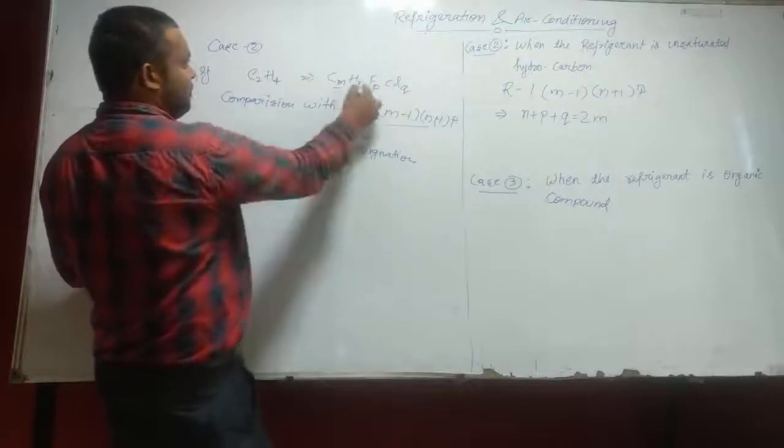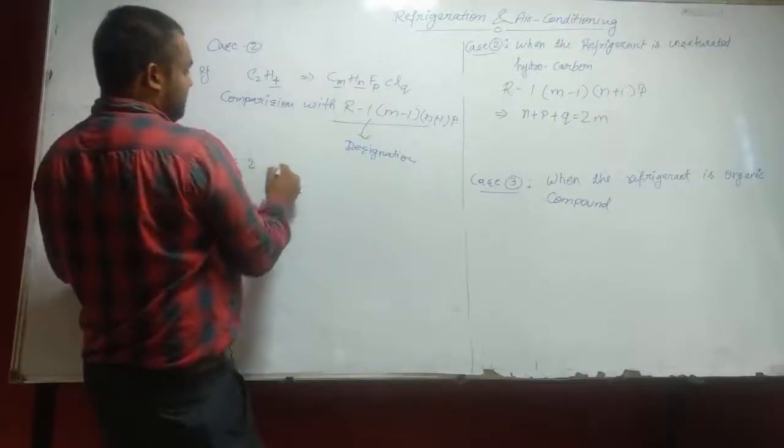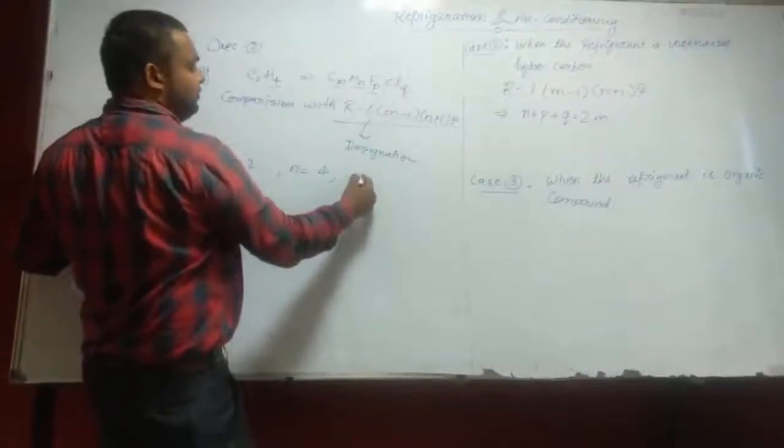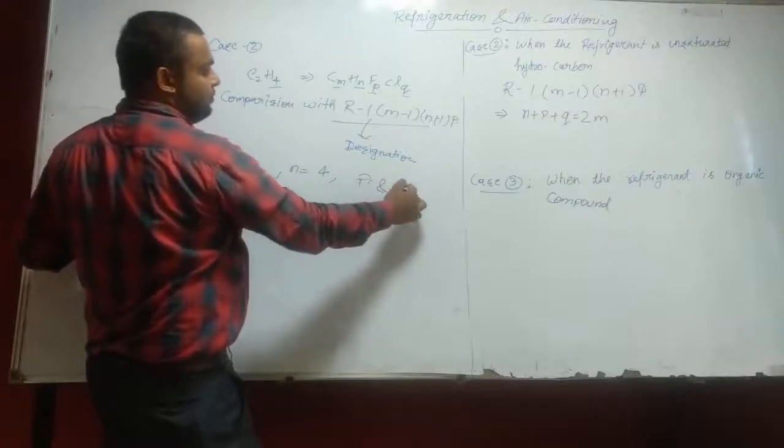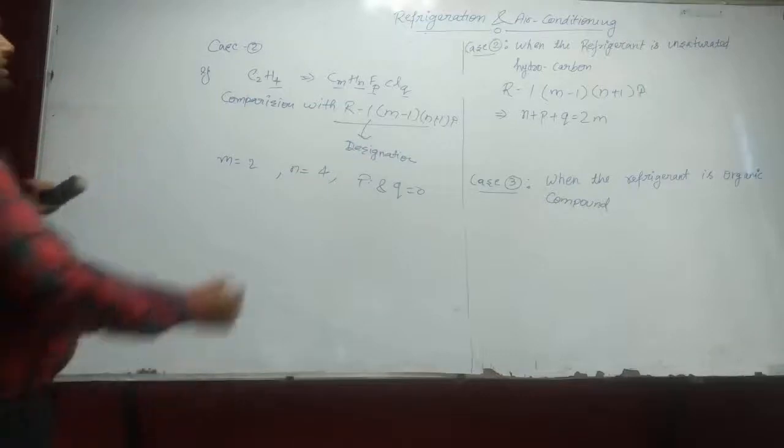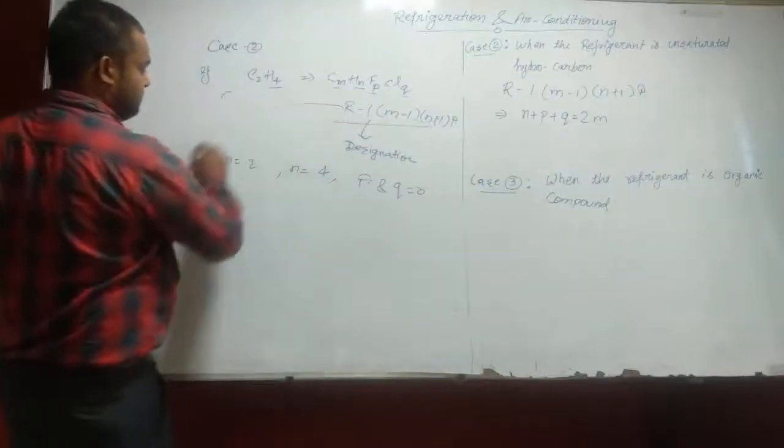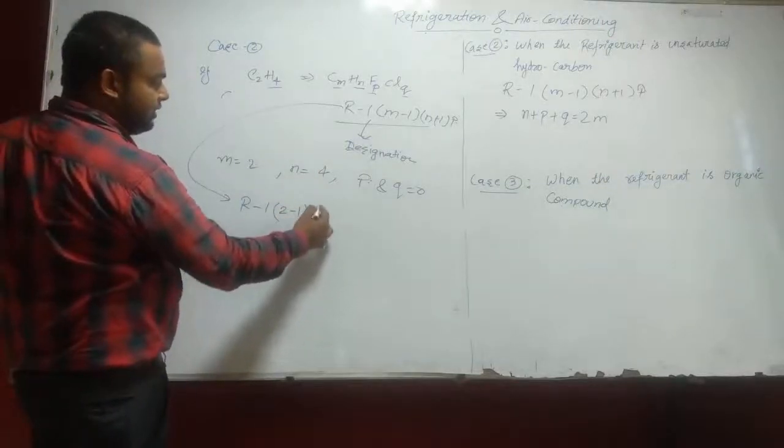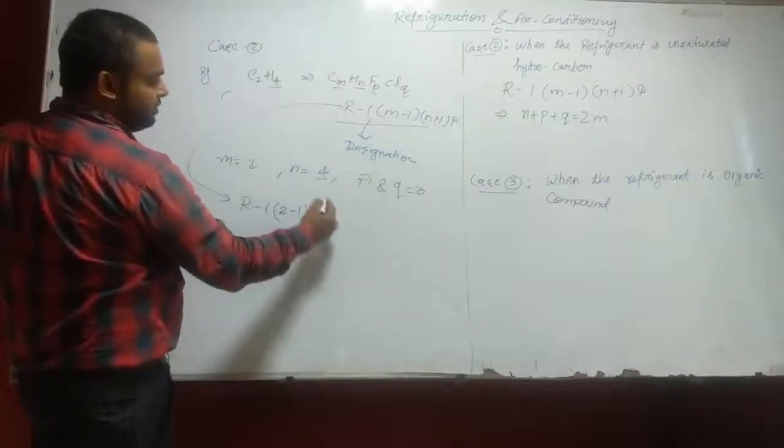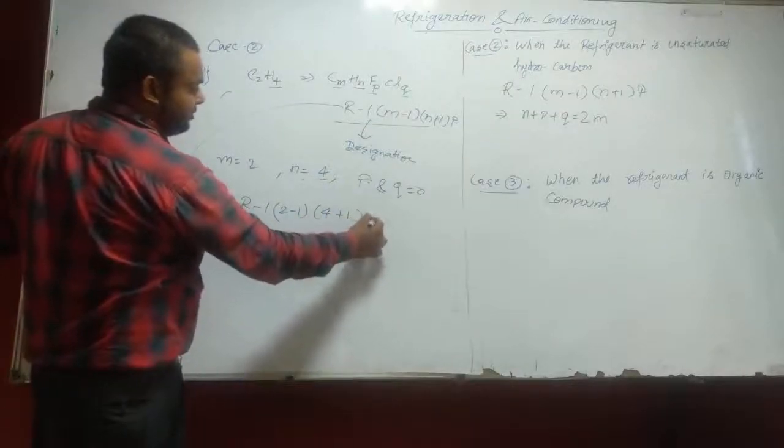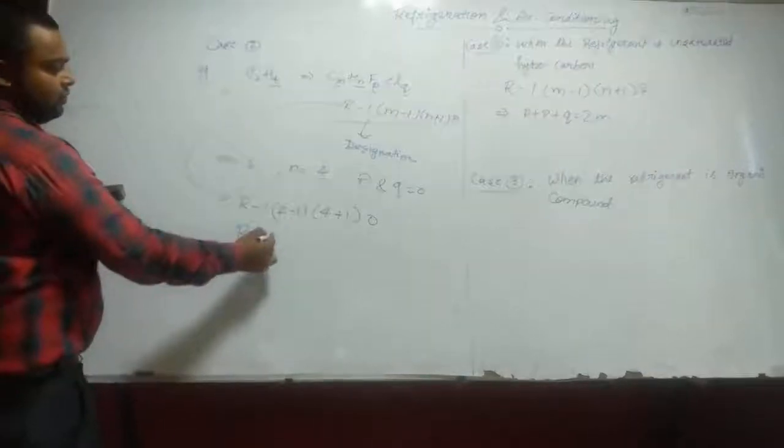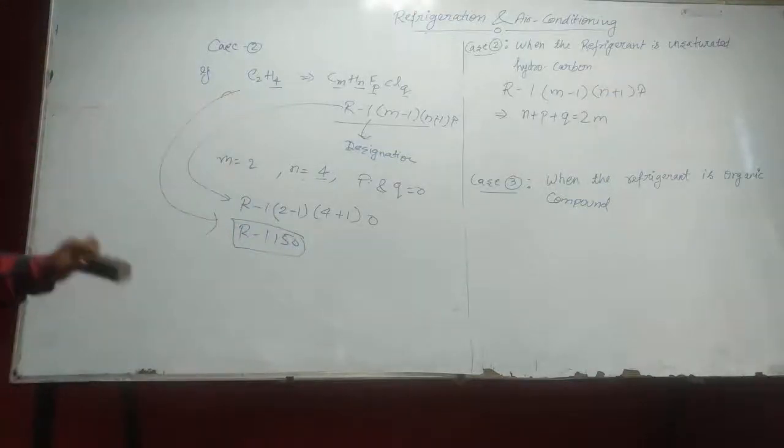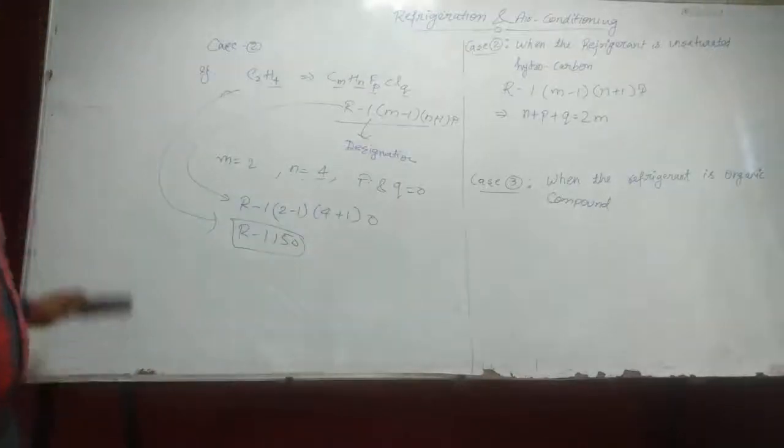Here M = 2, and N = 4. And here P and Q = 0. So for the designation, use this formula: R1(M-1). It means 2-1. And N+1 means 4+1. And P = 0. It will become R150. This is the designation of C2H4, the second case, unsaturated hydrocarbon.